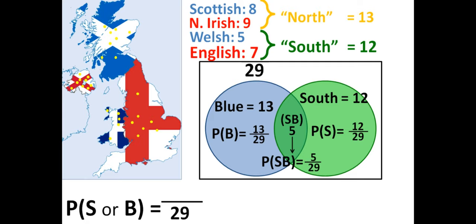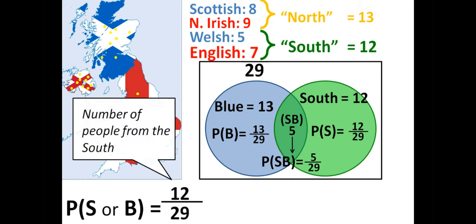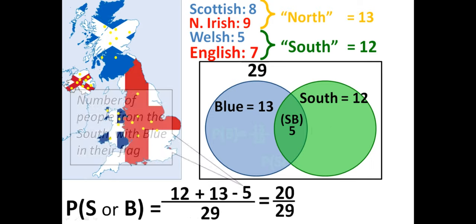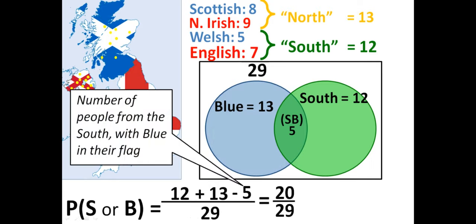The sample is the same so our denominator is 29. And, we have 12 people from the south plus 13 people with blue flags minus 5. Now, since Welsh people in our sample belong to both groups and they were already included when counting all people classified as from the south, we have to subtract this number. Otherwise, we would be counting them twice.